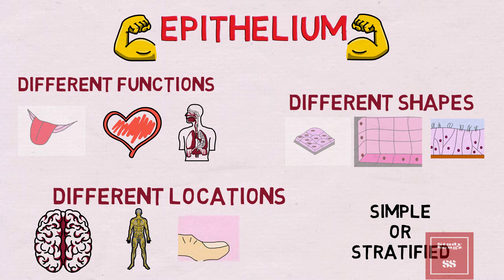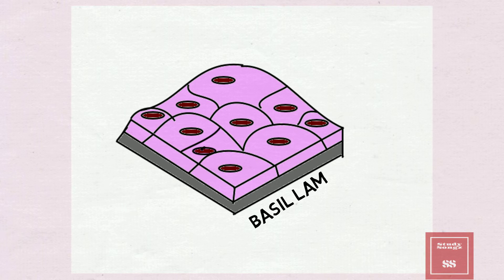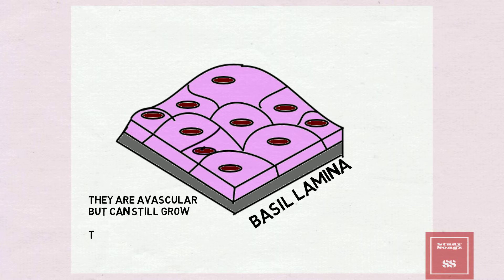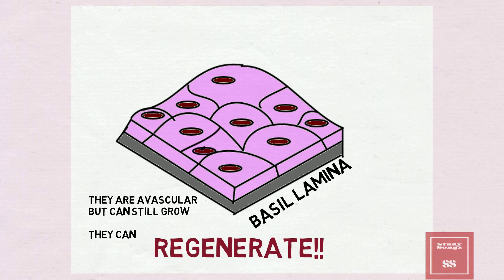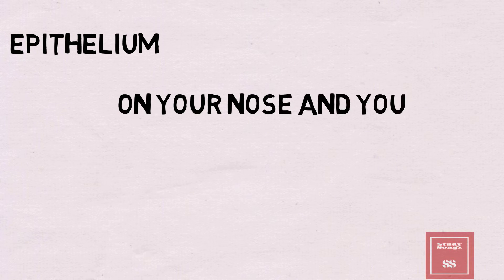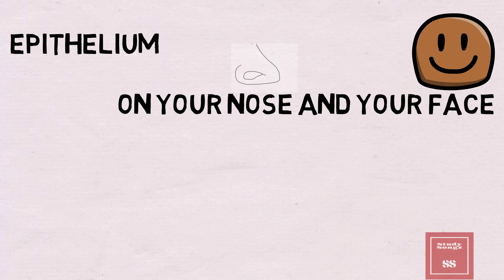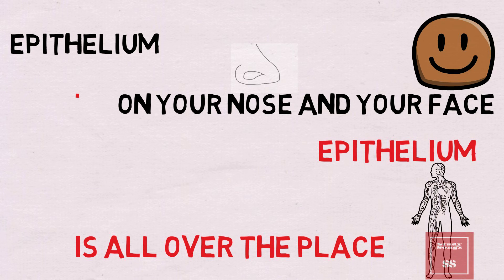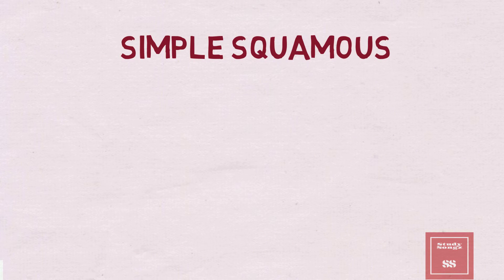Basement lamina — they're avascular. They can still grow, they can regenerate. Epithelium is on your nose and your face — epithelium is all over the place.